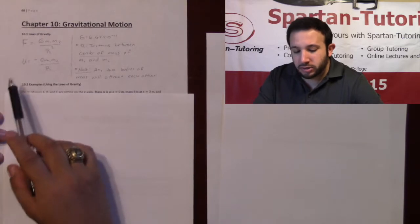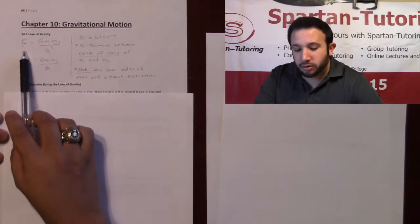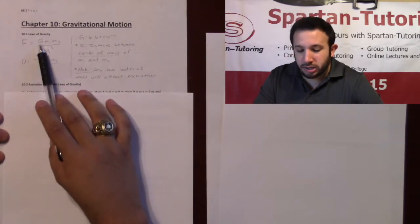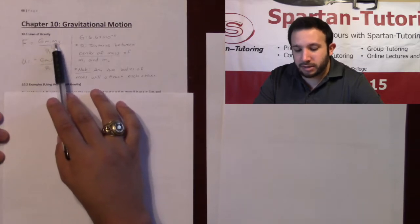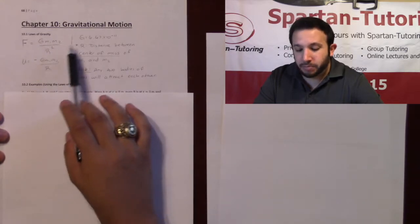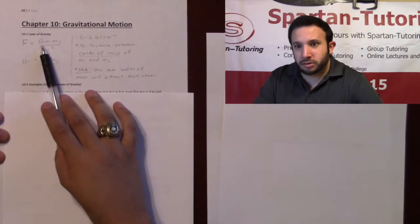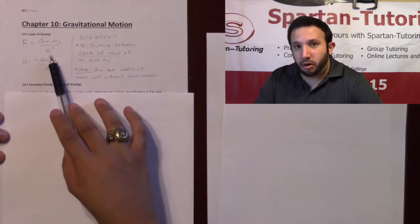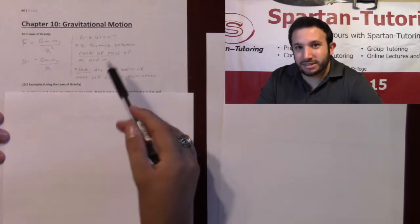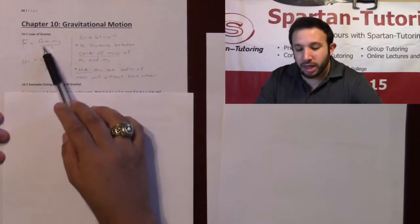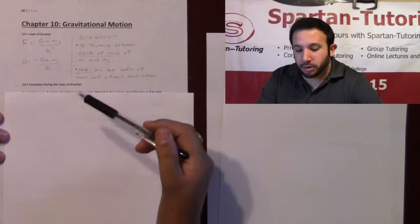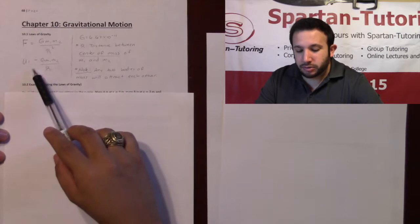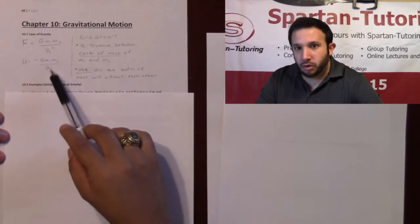Taking a look at these two equations: the gravitational force between any two bodies of mass is going to be capital G, m1 times m2 — that's the two masses of the objects — divided by r squared. That capital G is a gravitational constant, it is 6.67 times 10 to the negative 11. Now r — this is extremely important — r is the distance between the center of mass between m1 and m2. And then if you want the potential energy between two objects, that's going to be negative G, m1, m2, over r.